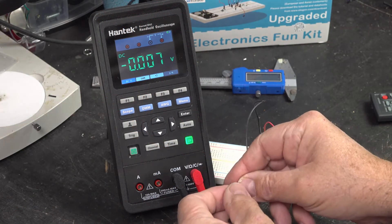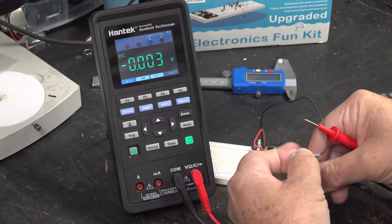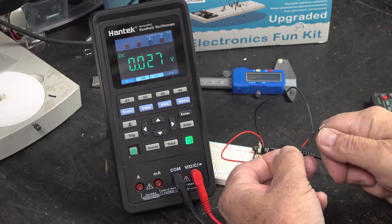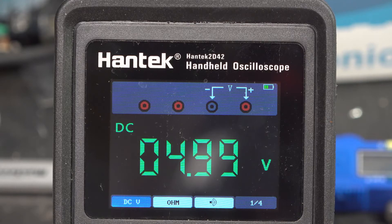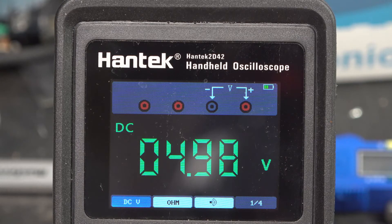So we're going to take the negative lead of the multimeter, hook it up to black, and the red positive lead of the multimeter, and hook it up to the plus 5 volts, and there you have it, 4.98 volts DC.